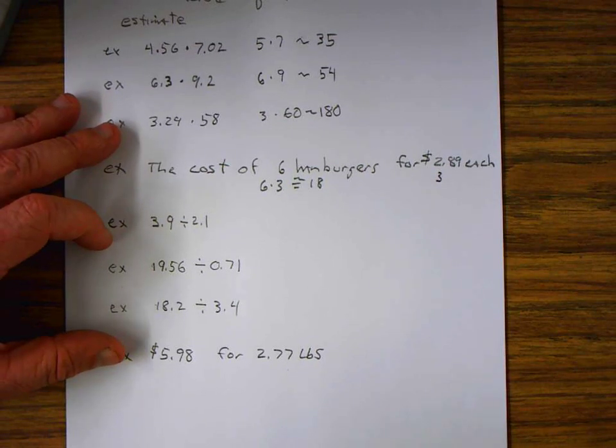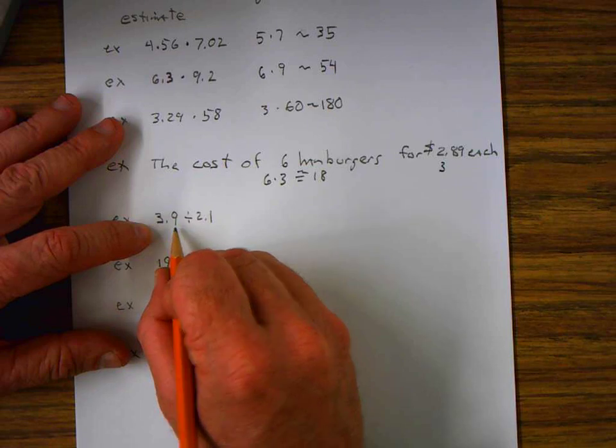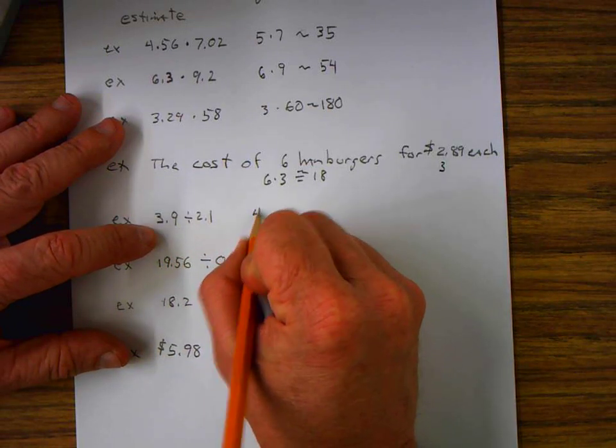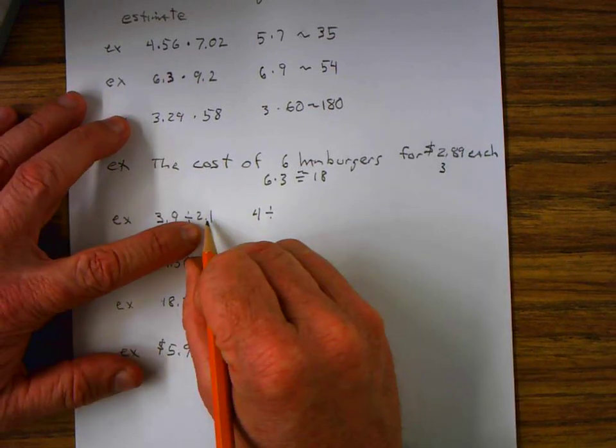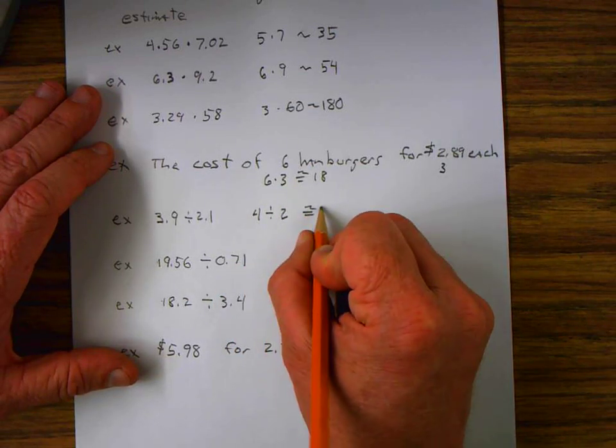In this next example, we're doing division. So we do the same thing. 3.9 can be rounded to 4 divided by 2.1 can be rounded to 2. So 4 divided by 2, our estimate is approximately 2.